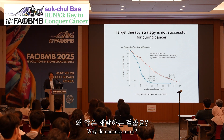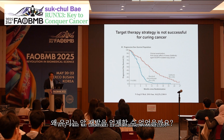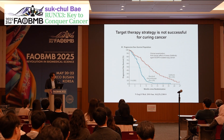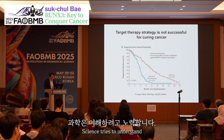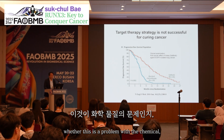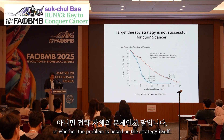Why does cancer recur? Why were we unable to inhibit cancer recurrence? Science tried to understand whether this is a problem of the chemical, or whether the problem is based on the strategy itself.